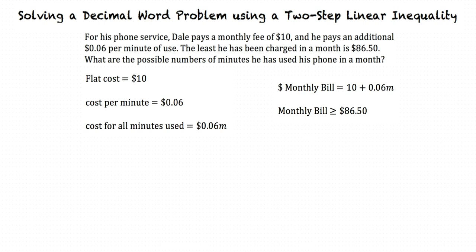We can use this information along with our equation for cost based on minutes used in order to set up the inequality. So his cost, shown in this equation, has always been greater than or equal to 86.5.